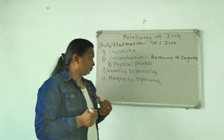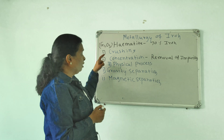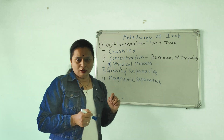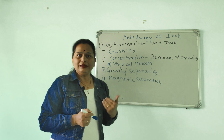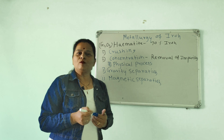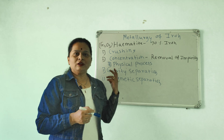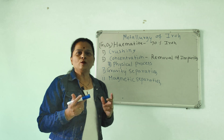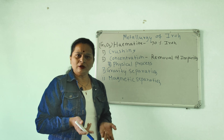The first step is crushing. Ore occurs in nature in the form of big stones. Therefore, they are crushed using a big jaw crusher to make fine powder.